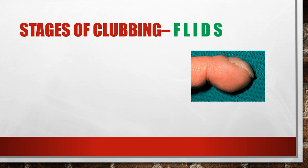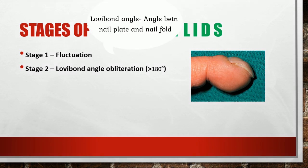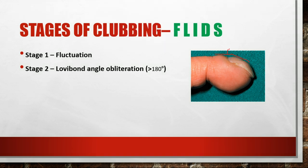To know about the stages of clubbing, remember the mnemonic FLITS. Stage one is fluctuation — the soft tissue just below the nail bed gets softened and fluctuation of the nail bed occurs. In stage two, there is obliteration of the Lovibond angle. This angle is the Lovibond angle, and in case of clubbing this angle becomes greater than 180 degrees; normally it should be less than 165 degrees.